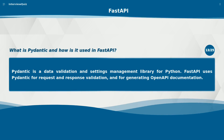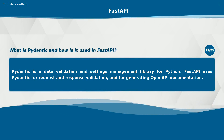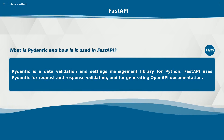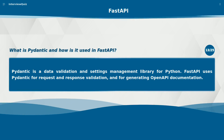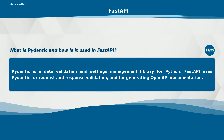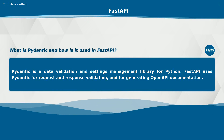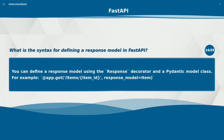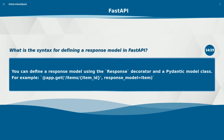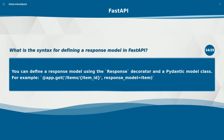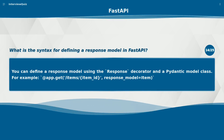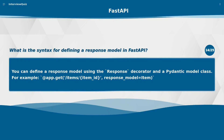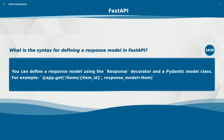What is Pydantic and how is it used in FastAPI? Pydantic is a data validation and settings management library for Python. FastAPI uses Pydantic for request and response validation and for generating OpenAPI documentation. You can define a response model using the response_model decorator with a Pydantic model class, for example: @app.get('/items/{item_id}', response_model=Item).